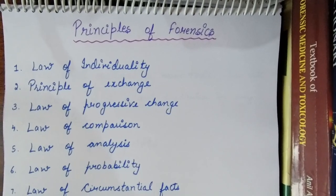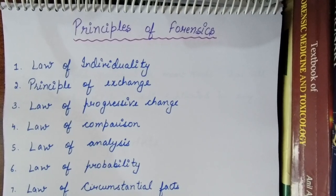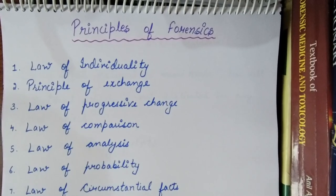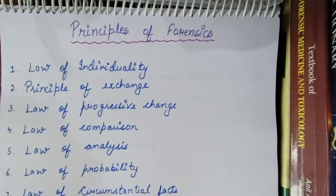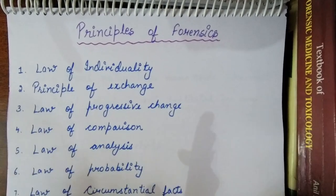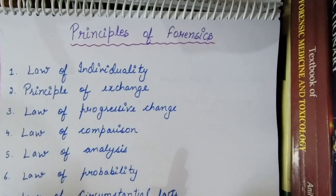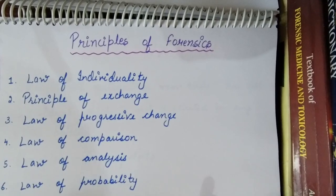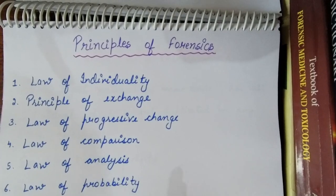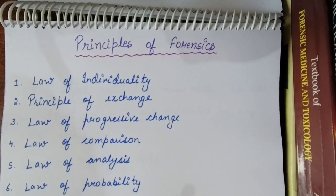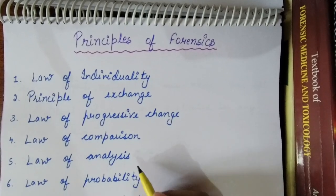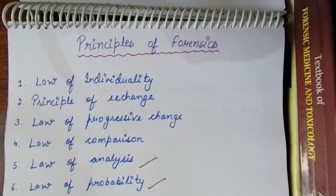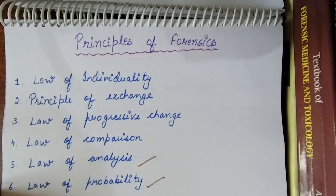Today I am going to teach you about the Principles of Forensic Science, which is the basis of Forensic Science. These are the 7 basic principles: Law of Individuality, Principle of Exchange, Law of Progressive Change, Law of Comparison, Law of Analysis, Probability, and Circumstantial Facts.